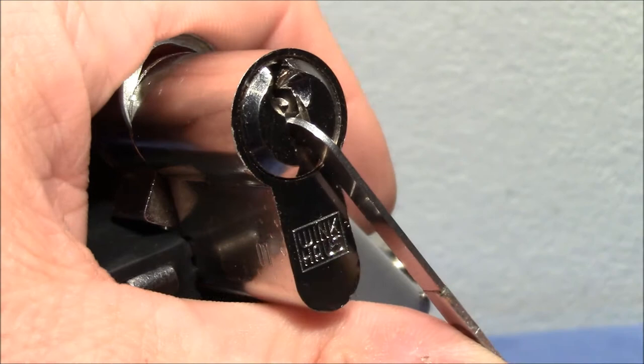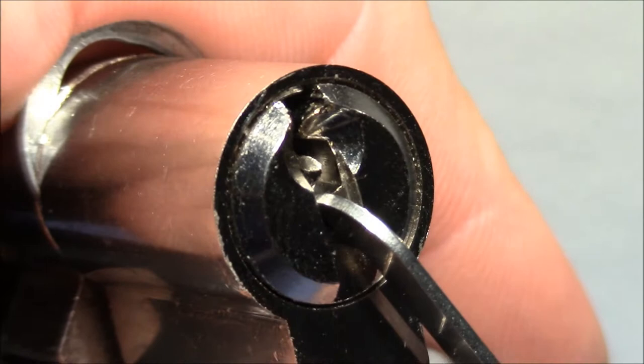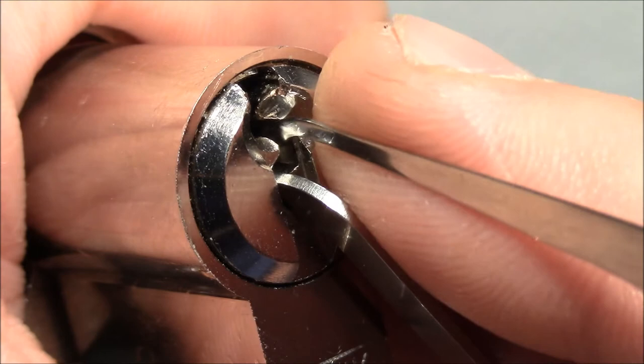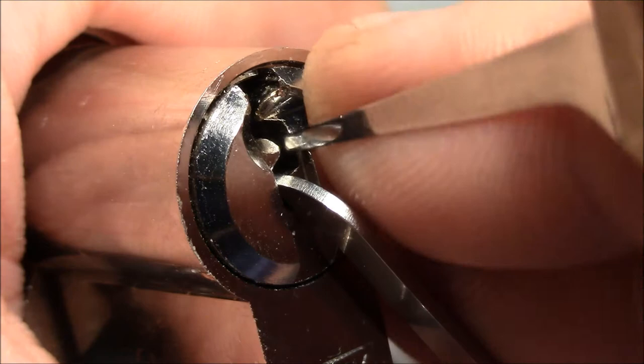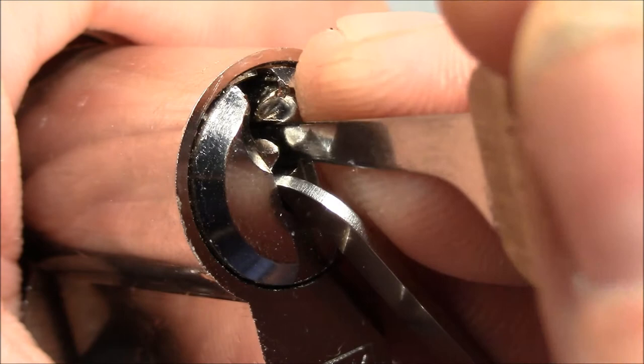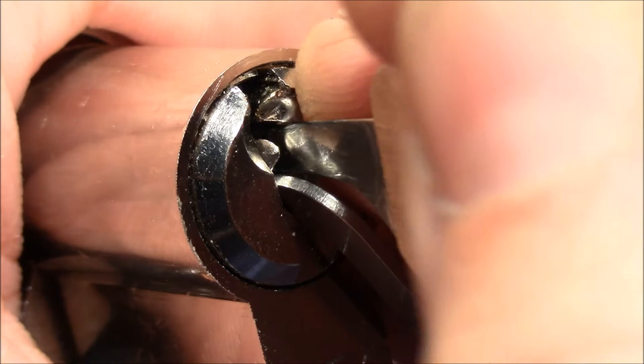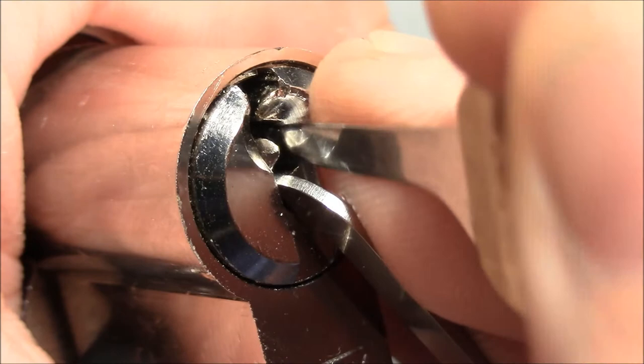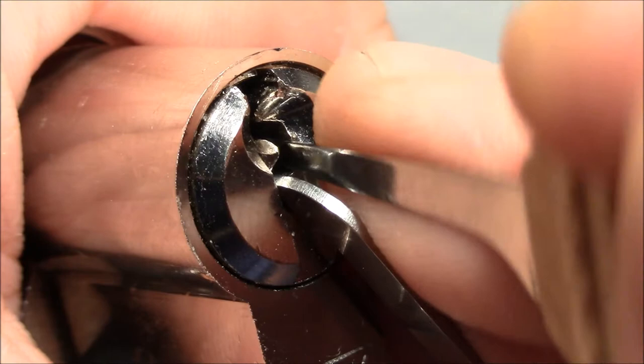I turn it counter clockwise and start at 1. Pin 1 is binding. Set it, work my way to the back. There's not much feedback in the beginning. These pins in the back are also binding. Sometimes quite hard to say which pin it is, because it's very narrow, very tight in here, and you also have to fight with the warding, and here we go.